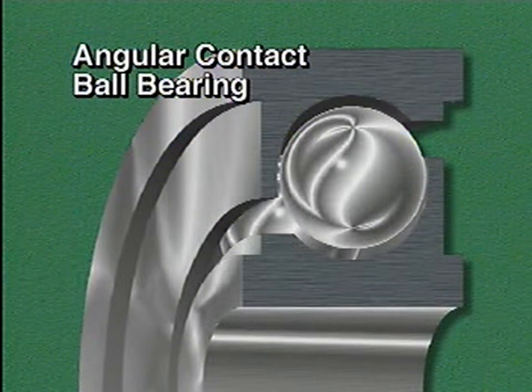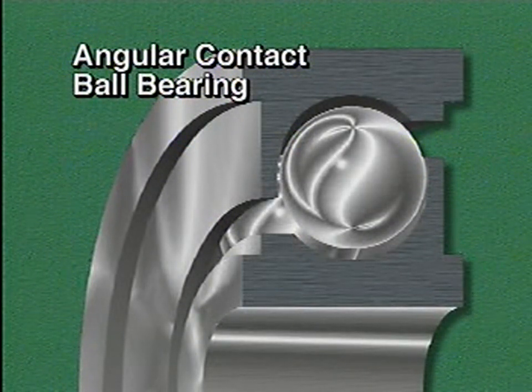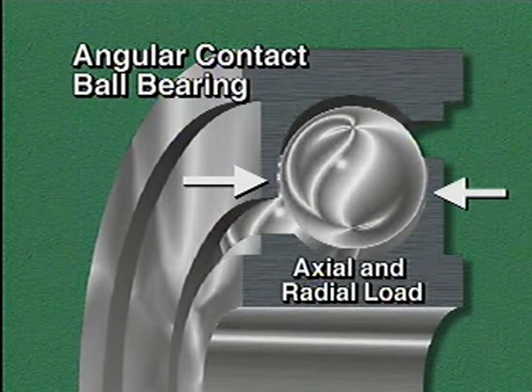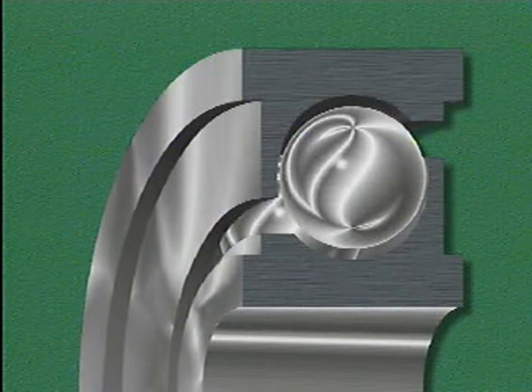Another type of ball bearing is an angular contact ball bearing. An angular contact ball bearing has a high shoulder on one side of the inner ring and a high shoulder on the opposite side of the outer ring. This design allows the bearing to handle both axial loads and radial loads. Angular contact bearings are often used in pairs so that they can support axial load in either direction. The surfaces that contact each other are specially machined to match. If one of the pair fails, both bearings must be replaced.